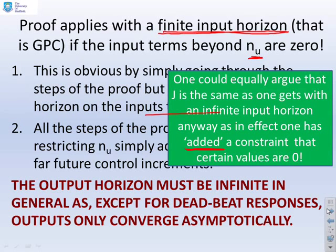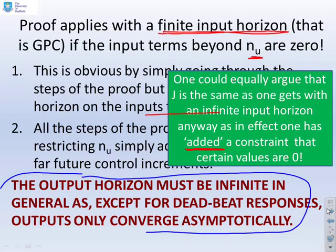The key thing to remember, however, is that the output horizon must be infinite in general because unless you have deadbeat responses, which I'm going to ignore because that would be rather unusual, then the outputs only converge asymptotically. So you can choose the inputs to converge in finite time, but with the outputs, because they're subject to system dynamics, they will tend to converge asymptotically, so you always need an infinite output horizon.